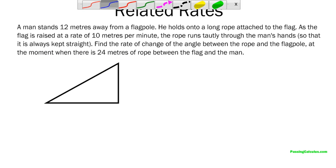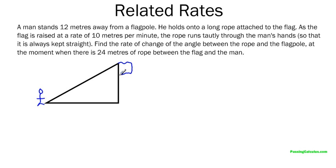I like my triangles this way for some reason. Alright, so here's our little guy standing over here. And here's the flag somewhere at the top here. And let's see what we have. So a man stands 12 meters away from a flagpole. So that number is constant. That's not changing. So he's always 12 meters away from the flagpole. So that's important to know.